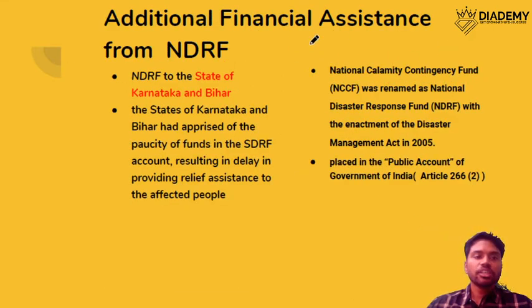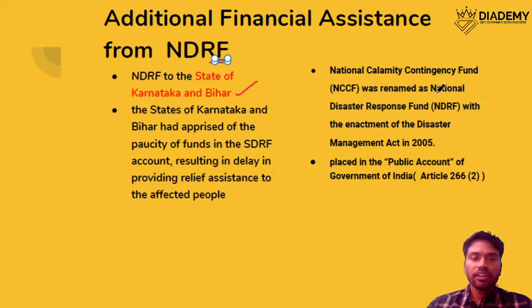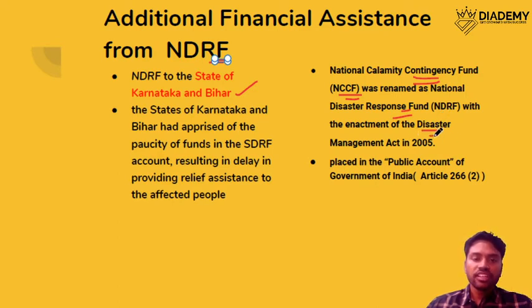The next topic is the NDRF. There was recent additional financial assistance given to Karnataka and Bihar. The NDRF was initially called the National Calamity Contingency Fund and was renamed the National Disaster Response Fund with the enactment of the Disaster Management Act 2005. It is placed under the public account under Article 266(2) of the Constitution.